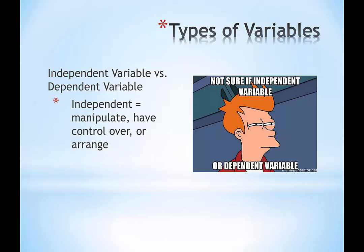The independent variable includes those variables we manipulate, have control over, or arrange. For example, gender is a very popular variable in psychology; however, we can't randomly assign individuals to their genders—they actually have those themselves. So we call those subject variables. We can arrange people by gender—men and women—and ask them to self-select on a survey. Subject variables are traits, qualities, and characteristics that people carry around with them. Democrat, Republican, or Independent—I don't manipulate or control that, but I can arrange people by the category or classification I'm interested in.